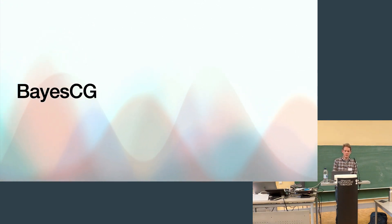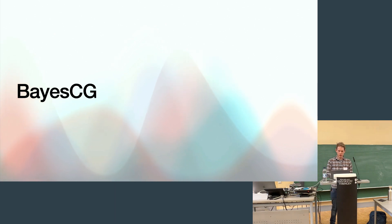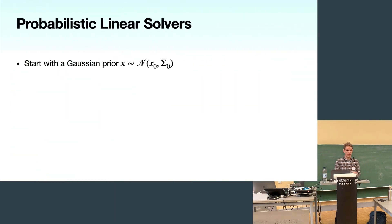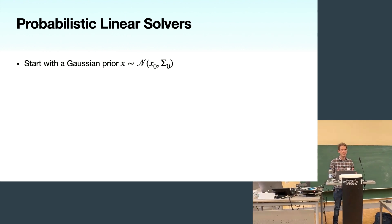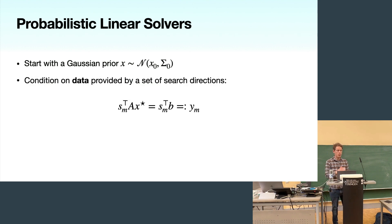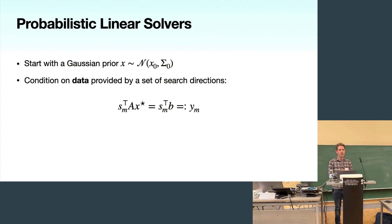Now we can start talking about Bayes-CG. In general, probabilistic linear solvers start with a Gaussian prior: the unknown solution is assumed normally distributed with mean X_0 and covariance Σ_0. We then condition this prior on data provided by a set of search directions S_m, similar to the search directions from CG. For now these are just an arbitrary user-specified set, and we'll see how to build a nice set related to CG shortly.